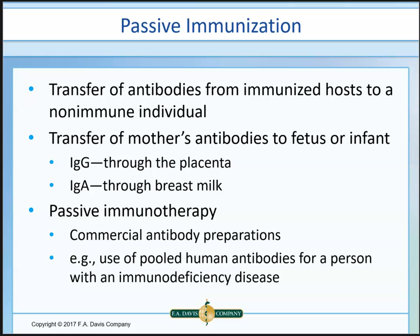Passive immunization is where we transfer antibodies that are already made — we don't go through the process of vaccination or natural exposure. A couple of examples are transfer from a mother: through the placenta in utero, which involves IgG, or through breast milk, which is a secretion involving IgA. So the mother's antibodies are given to the fetus in utero via the placenta, or to an infant through breast milk.